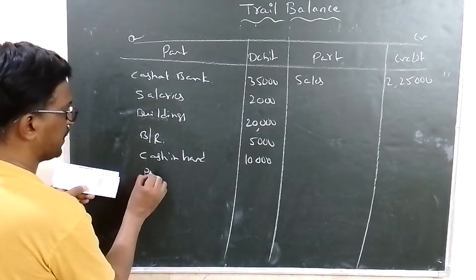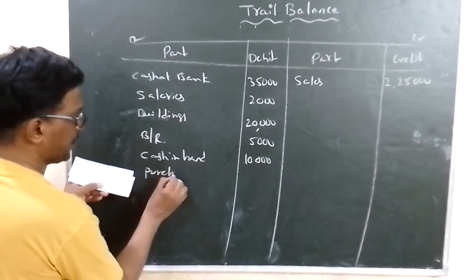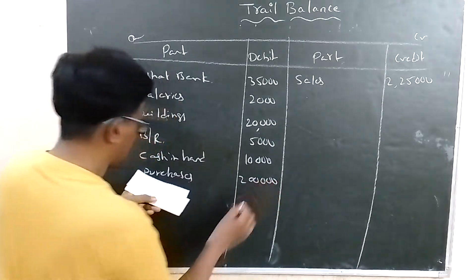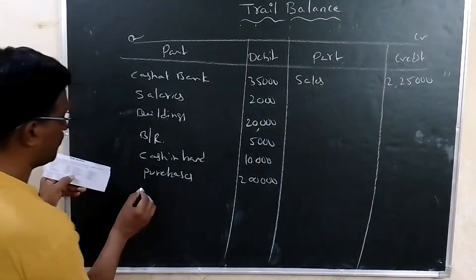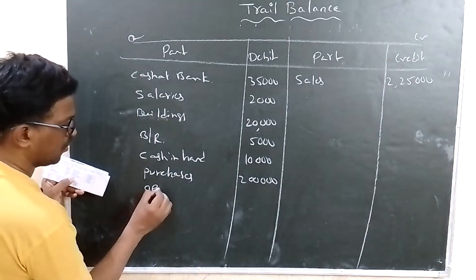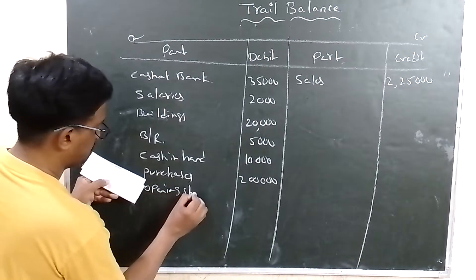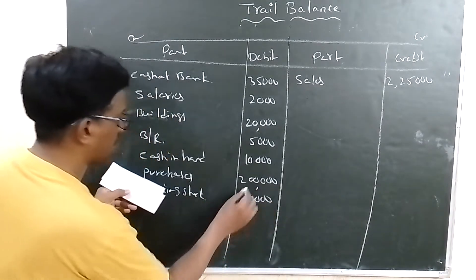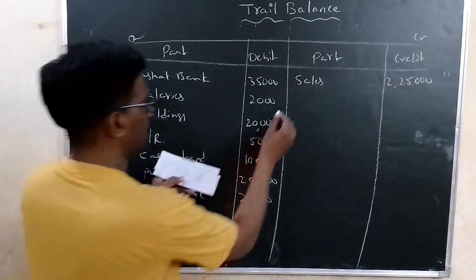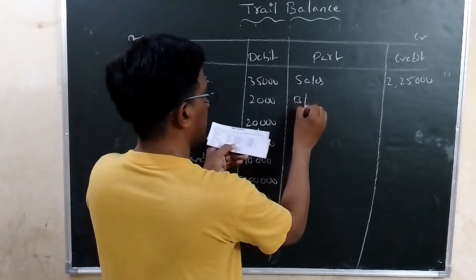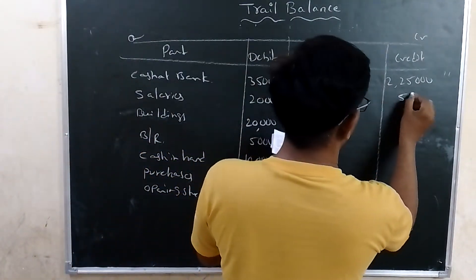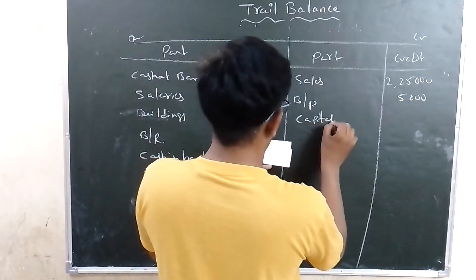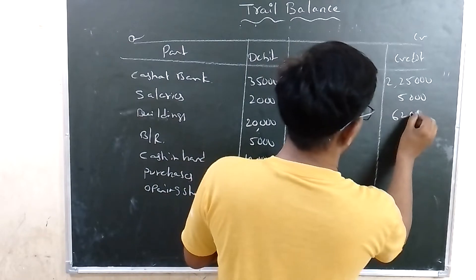Purchase is an expense — debit side, 2,00,000. Opening stock is also an asset — debit side, 20,000. Bills payable is a liability — credit side, 5,000. Capital is a liability — credit side, 62,000.